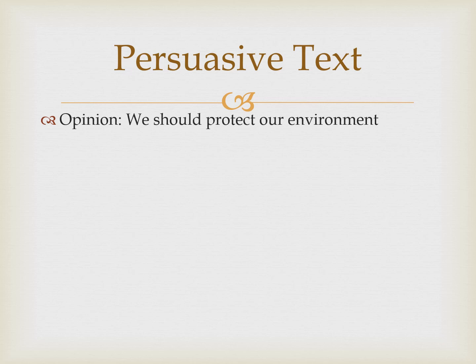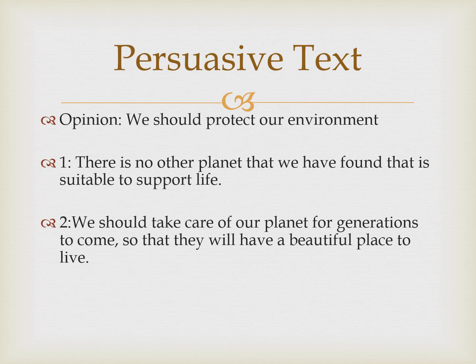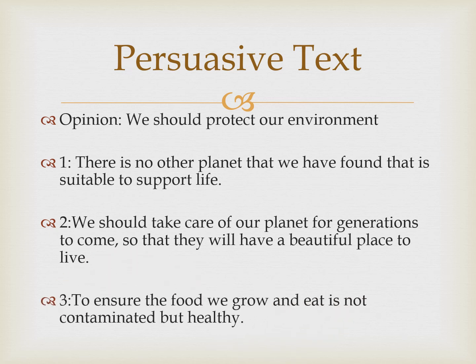Opinion: we should protect our environment. Here are just example reasons. Reason one: there is no other planet we have found that is suitable to support life, so we can't go live on the moon, Mars, or Jupiter — there's not enough oxygen, no water, etc. Reason two: we should take care of our planet for generations to come — our kids, our kids' kids — so they will have a beautiful place to live. Reason three: to ensure the food we grow and eat is not contaminated but healthy. If we grow food with contaminated water, it can make us sick.